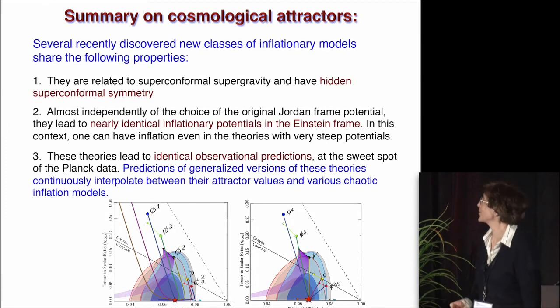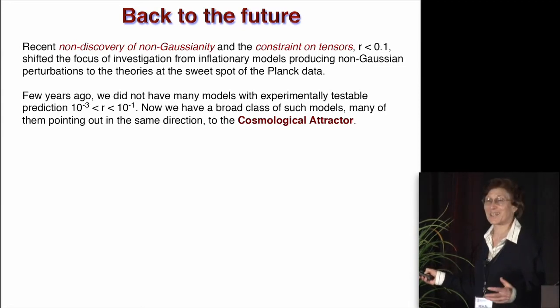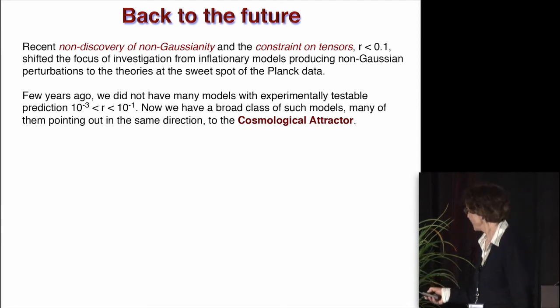So now back to future, let me formulate the expectation. And the expectation is that there isn't non-discovery for now of non-Gaussianity, and the fact that we have the constraint on tensor, which says that r today is less than 0.1, shifted the focus of investigation from inflationary model producing non-Gaussian perturbation to theories at the sweet spot of Planck data. So what are the models which are today allowed? So a few years ago, we did not have many models with experimentally testable prediction with r between 10^-1 and 10^-3. Now we have a broad class of such models, many of them pointing out to the same direction, which is a cosmological attractor.